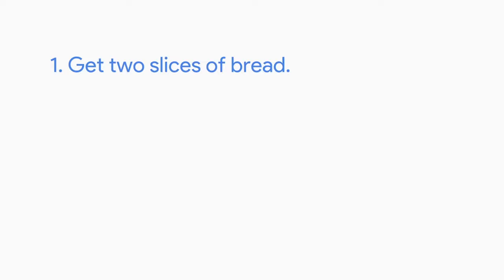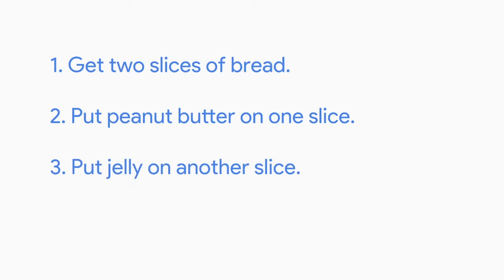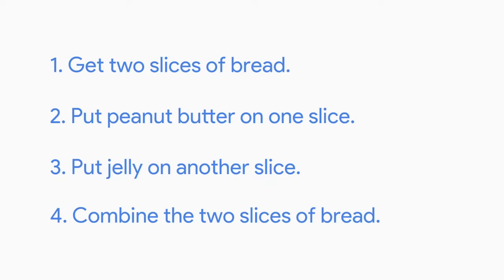RAM is our computer's short-term memory. It stores information in a location our CPU can access faster than it could with our hard drive. We can give our chef one or two recipes at a time instead of reciting the entire cookbook. Let's say I want to make a peanut butter and jelly sandwich — I send the recipe to our chef one line at a time: get two slices of bread, put peanut butter on one slice, put jelly on another slice, combine the two slices. Our chef can only communicate in ones and zeros, so instead of sending something readable, we have to send binary instructions.